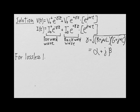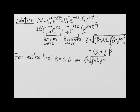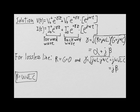For a lossless transmission line, where the series resistance and shunt conductance, r and g, are both equal to zero, the propagation constant gamma can be simplified. It reduces to j omega times the square root of LC, which is equal to j beta, where beta is equal to omega times the square root of LC. So for the case of a lossless transmission line, beta is the propagation constant of the current and voltage waveforms and is given in units of radians per meter.